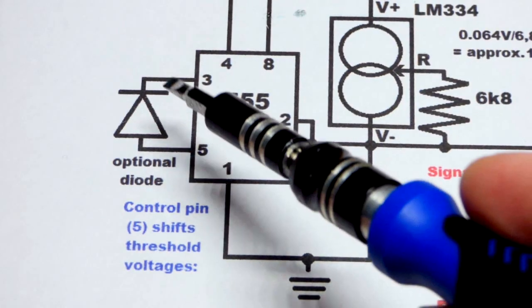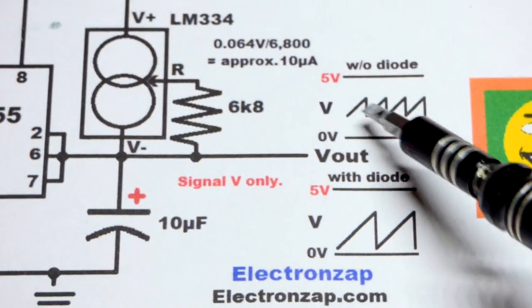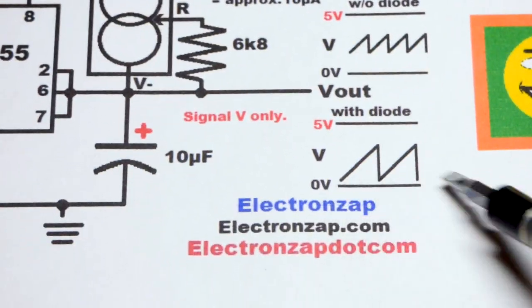So that brings us to the diode, which in this circuit is optional. Without it, you've got this waveform. With it, you've got that waveform.